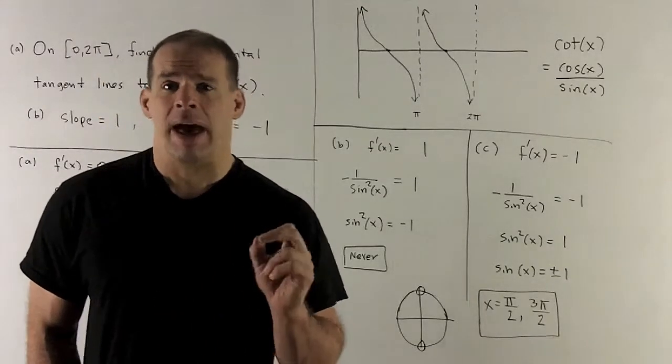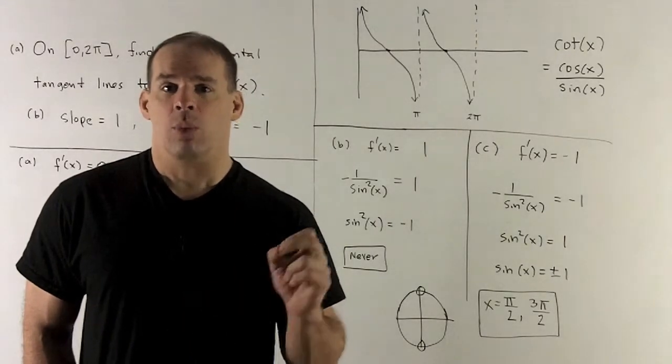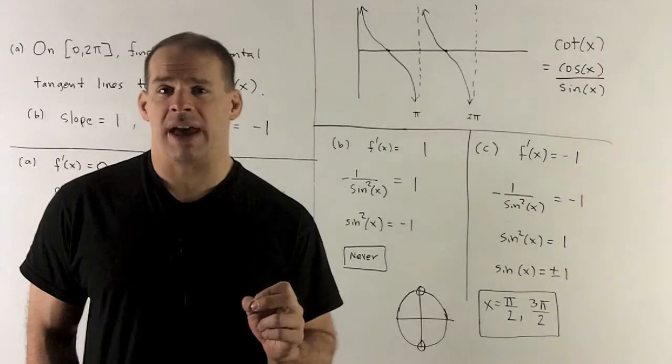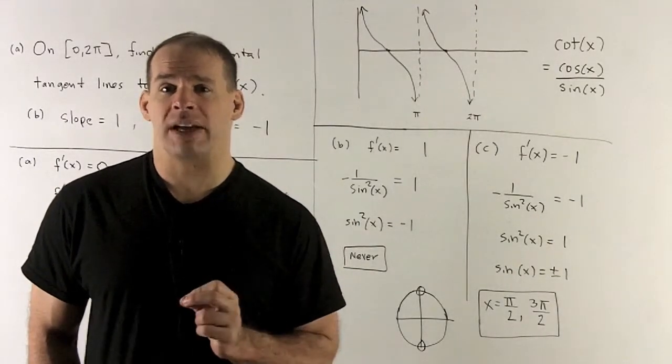Finally, how about equal to minus 1? Well, in this case, we can get somewhere. I'll have minus 1 over sine squared of x equal to minus 1. That shapes up to be sine squared of x equal to 1.